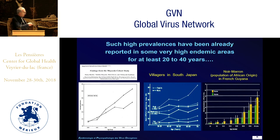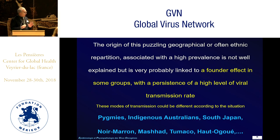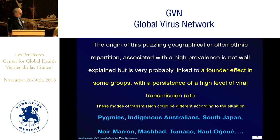If you go to South Japan with Nancy Mueller and Japanese colleagues, you can see that at 50 years old you have about 50% probability of being infected — the same as in this population. In French Guiana, where we work quite a lot, there is about 40% of persons over 50 years old being positive. Understanding the origin of this puzzling ethnic repartition associated with very high levels is not easy, but it's very probably linked to a founder effect in some groups with persistence of a high level of viral transmission. The modes of transmission and their relative proportions could be quite different across populations — in pygmies, Indigenous Australians, South Japan, the noir marron population of Brazil, Mashhad in Iran, Tumaco in Colombia, and in Central Africa.